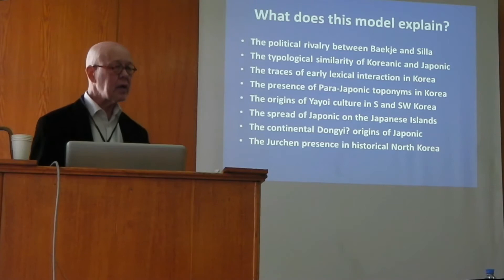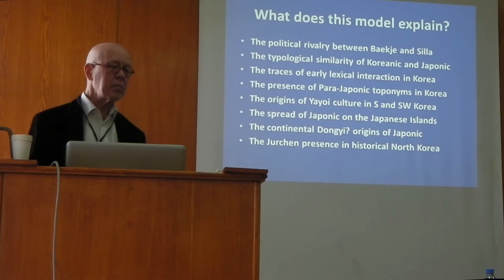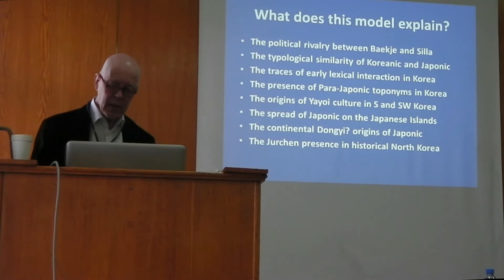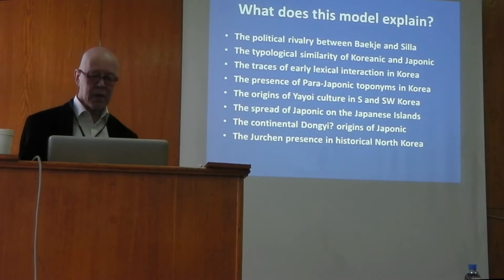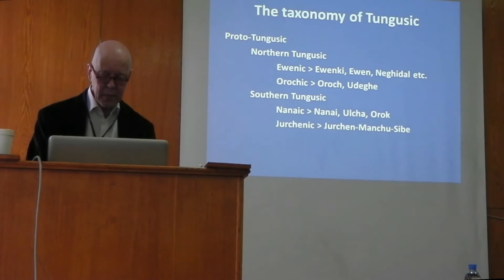Languages spread along the Amur in succession, and this model explains many things — among other things, the similarity of Korean and Japanese, which are really a Sprachbund language pair. Although today they are spoken quite separately, and in several centuries past they have not been in much contact, they were once co-existent on the Korean Peninsula, which explains why they became structurally so similar.